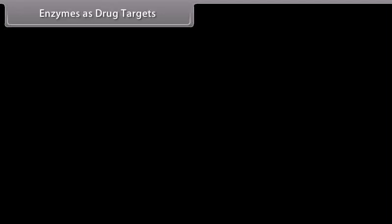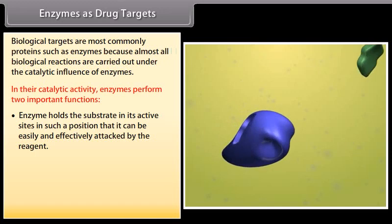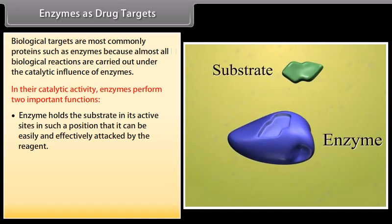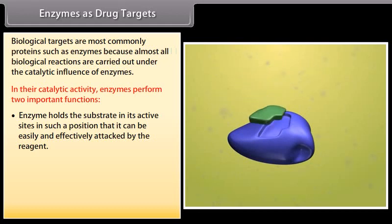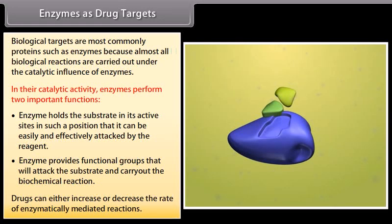Enzymes as drug targets: Biological targets are most commonly proteins such as enzymes, because almost all biological reactions are carried out under the catalytic influence of enzymes. In their catalytic activity, enzymes perform two important functions: first, enzymes hold the substrate at their active sites in such a position that it can be easily and effectively attacked by the reagent; second, enzymes provide functional groups that will attack the substrate and carry out the biochemical reaction. Drugs can either increase or decrease the rate of enzymatically mediated reactions.